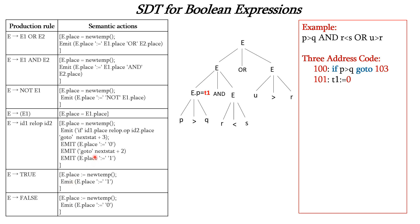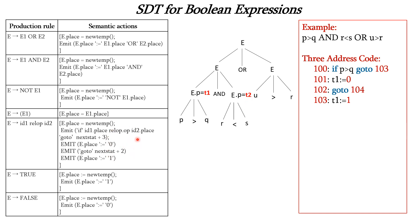At line 101, E.place = T1 = 0 (false). At line 102, goto 104. At line 103, T1 = 1 (true). Next we process r < s, which also follows the id1 relational-operator id2 rule, so we create temporary variable T2. The three-address code continues from line 104.